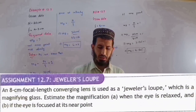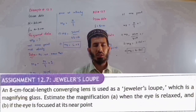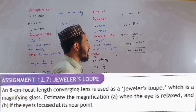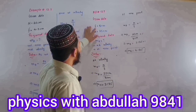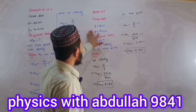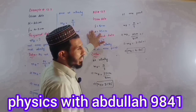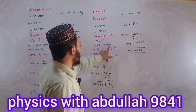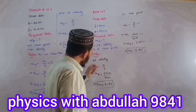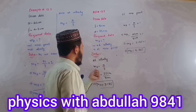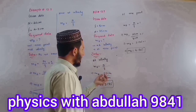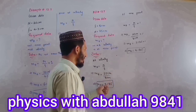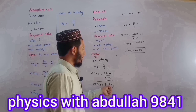If the eye is focused at its near point, the near point magnification applies. The focal length is 8 centimeters and the near point is 25 centimeters. At infinity, m_theta equals n divided by f: 25 centimeters divided by 8 centimeters equals 3.125.